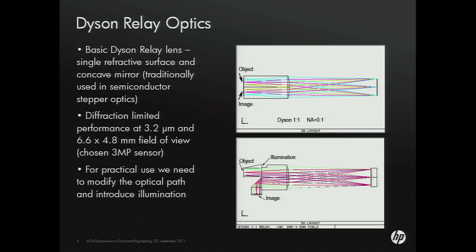If we look at the optics themselves, what these optics were designed for is replicating things, and they're used in the semiconductor industry. All they consist of is a single refractive surface and a mirror, and it allows you to replicate an object as an image, as we can see in the diagram. All we add here is a sensor off to the left or down to the bottom, and introduce some illumination device. It's a slightly more complicated situation than usual, but it's still low-cost and very simple to make.